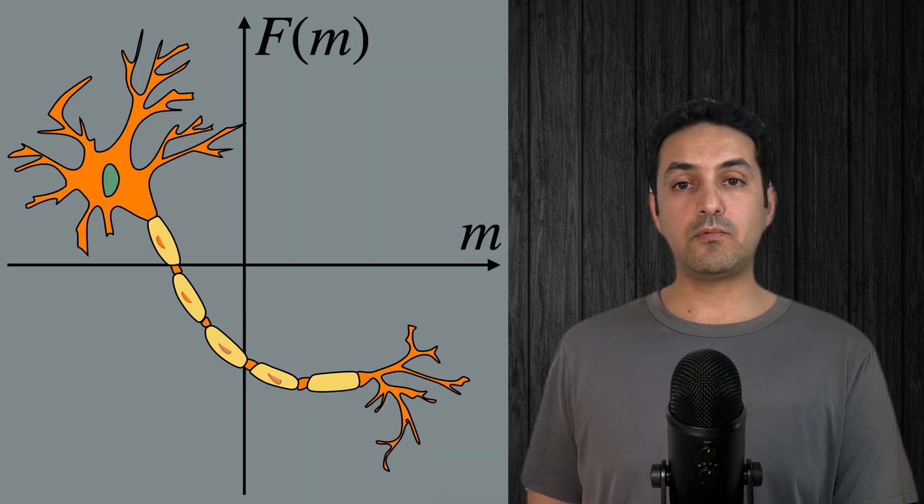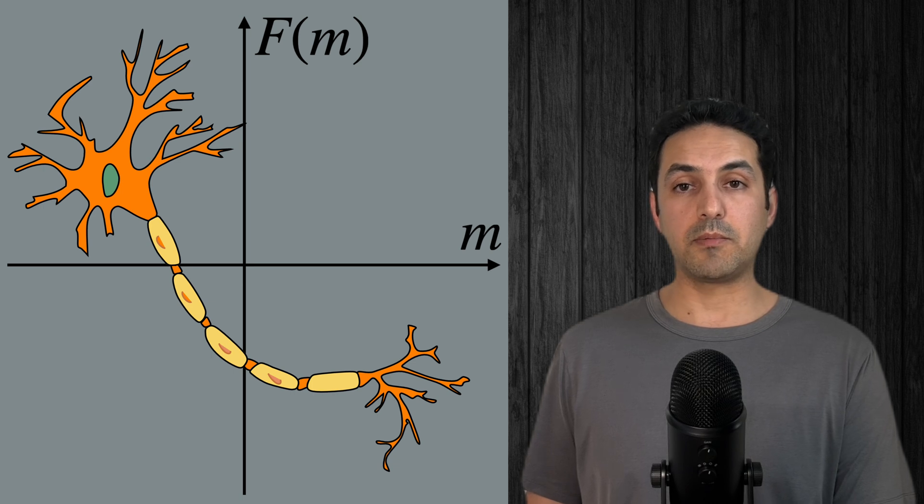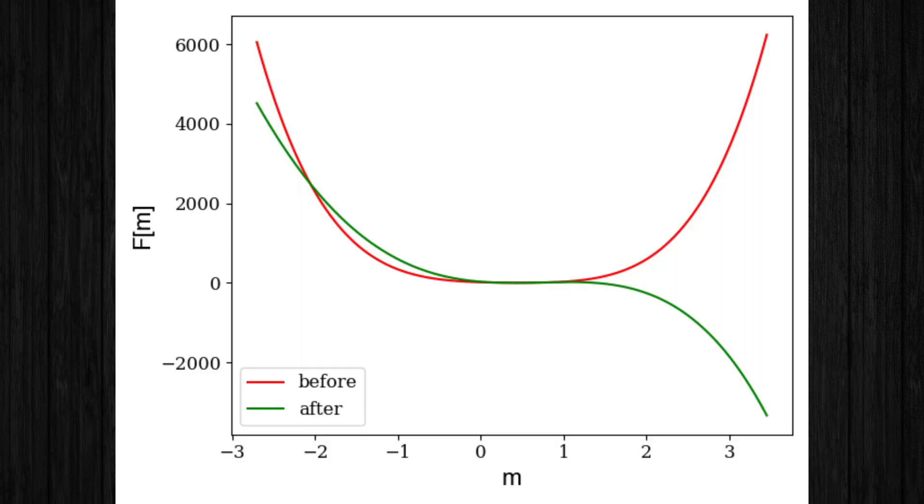Now let me show you what the free energy of the magnetization of the neurons in our experiment looks like. As you can see, the curve that belongs to the before administration of cocaine has a minimum at the mean of the magnetization and is therefore stable. However, the curve that belongs to data collected after the administration of cocaine does not have a minimum. Therefore, that system is not stable and will rapidly change after my observation.